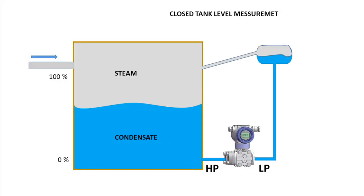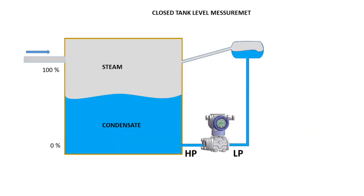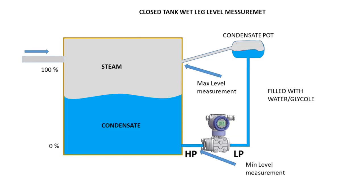Today we are going to discuss DP level measurement using the wet leg method. In the previous lesson we learned about the dry leg type installation. In dry leg, the low side impulse is filled with air from the top of the tank. In the wet leg method, the low side impulse line will be filled with water or glycol, because when we measure the level of a process which has the property of condensate, it will condensate into the impulse line and cause error in the measurement. For example, steam.